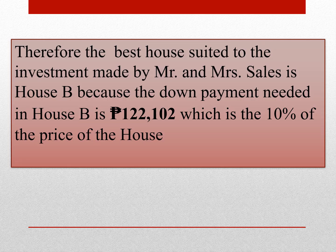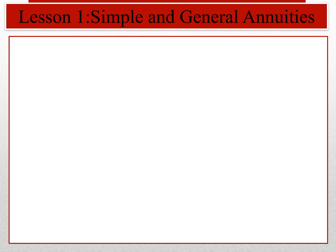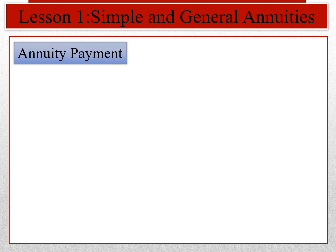Therefore, the best house suited to the investment made by Mr. and Mrs. Sales is House B. Because the down payment needed in House B is 122,102, which is the 10% of the price of the house. So, lesson one again: simple and general annuities.